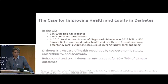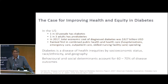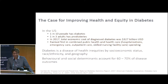Let me start with the case for improving equity in diabetes and why we need a population-level approach. I'm going to show an example of one of the most astounding, effective research-to-policy-to-practice examples in the United States to date. Diabetes at the global level is increasing exponentially in prevalence and in costs.